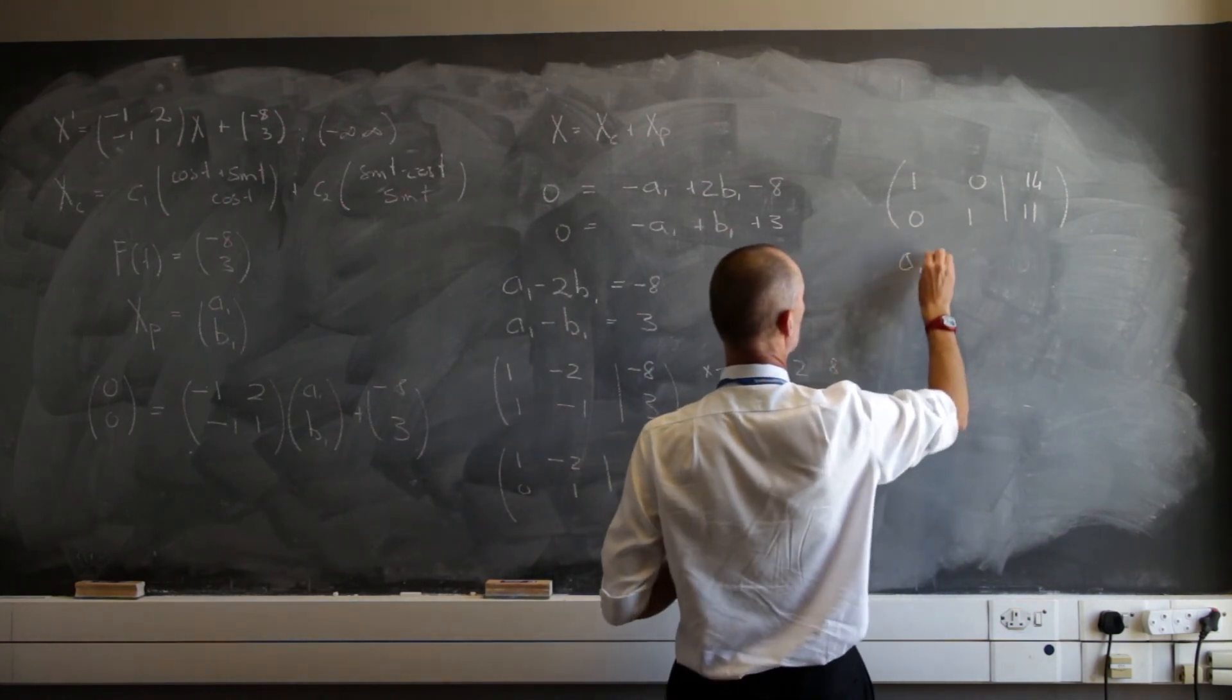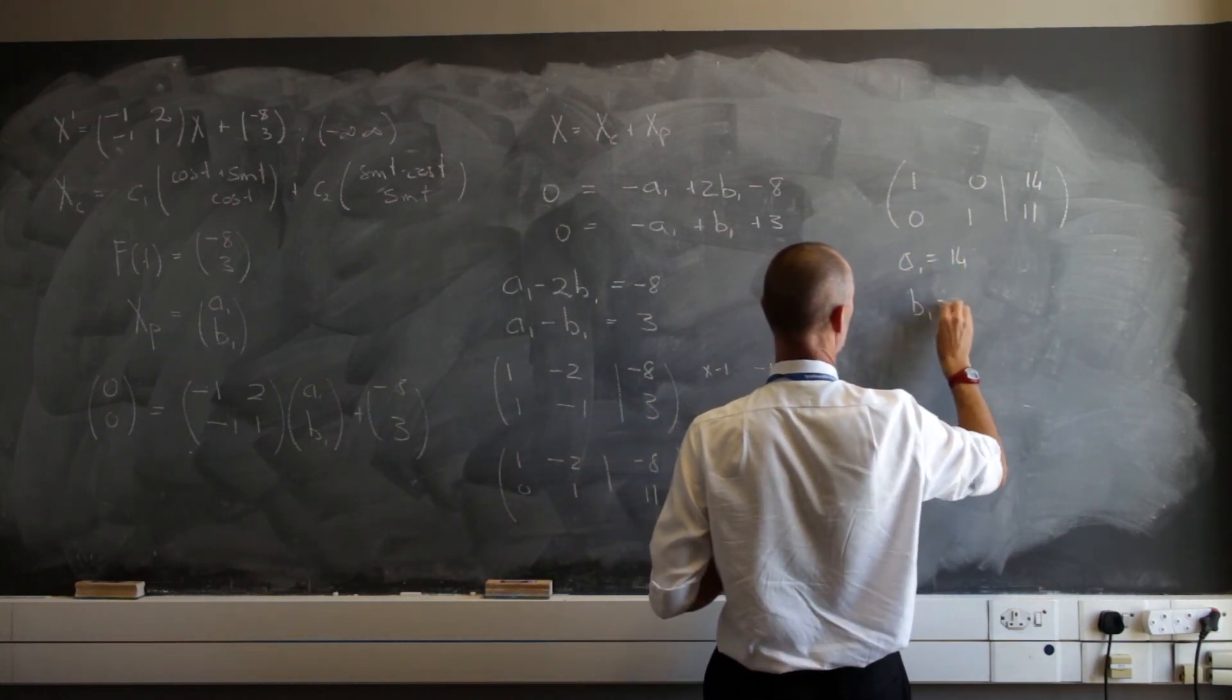So a sub 1 equals 14, and b sub 1 equals 11.